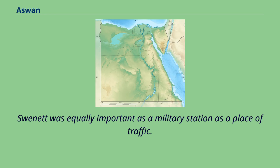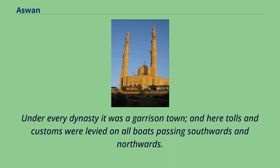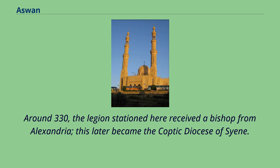Swenet was equally important as a military station and a place of traffic. Under every dynasty it was a garrison town, and tolls and customs were levied on all boats passing southwards and northwards. Around 330 AD, the legion stationed here received a bishop from Alexandria, which later became the Coptic Diocese of Syene.